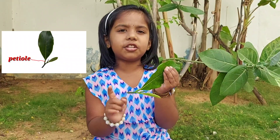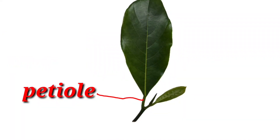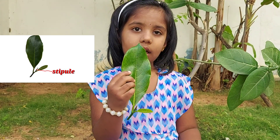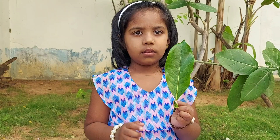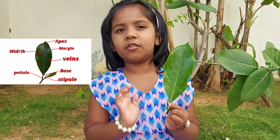This is the petiole, and this is the stipule. These are all the parts of the leaf.